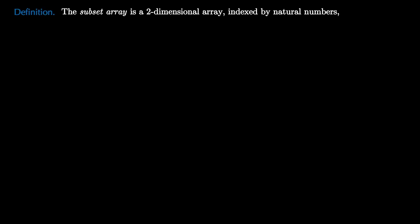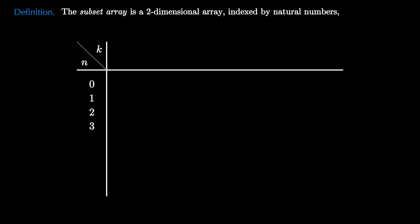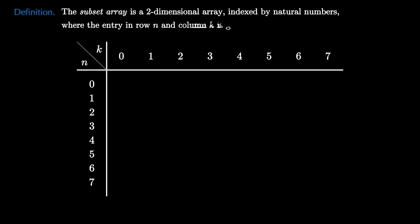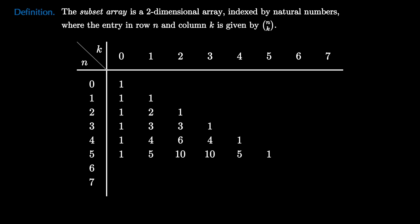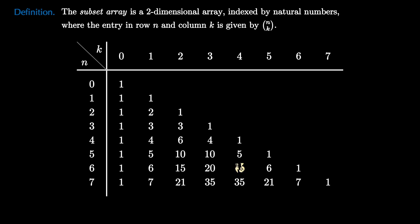Now let's find combinatorial identities using k-subsets instead of k-permutations by investigating the subset array. Just like the permutation array, the subset array is a two-dimensional array indexed by the natural numbers, showing up to row 7 and column 7. The entry in row n and column k is given by the number of k-subsets of an n-set, which is n choose k. For example, the entry in row 6 and column 4 is 6 choose 4, which equals 15.